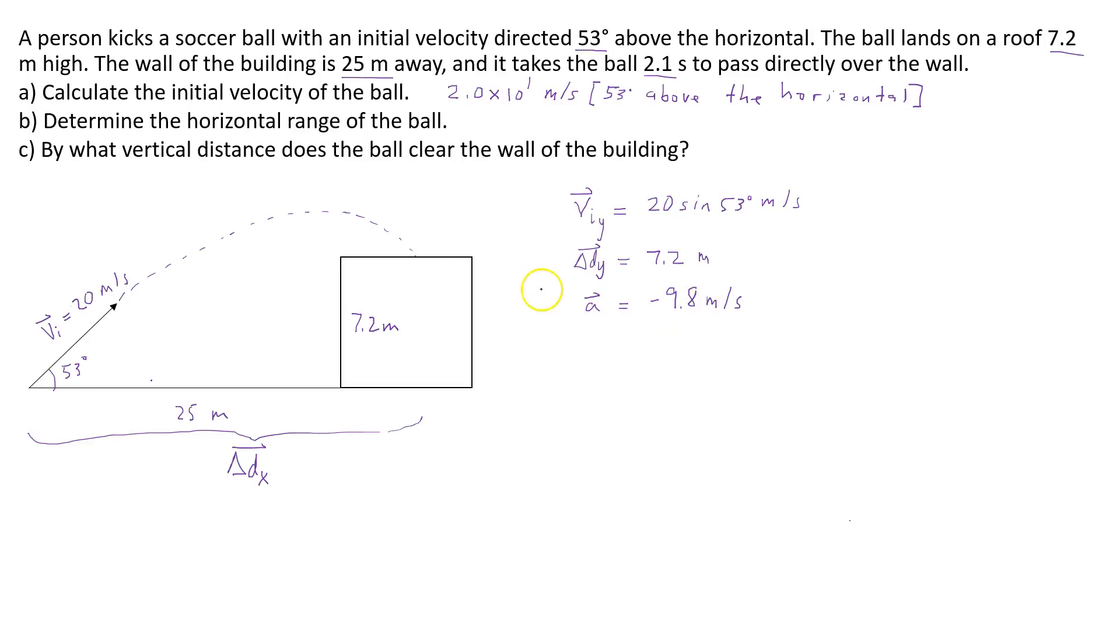The acceleration of the ball in the vertical plane is going to be negative 9.8 meters per second squared. And the reason it's negative is because I'm going to pick a sign convention that says that up is positive and to the right is positive. So initially the ball has a velocity that's directed up.